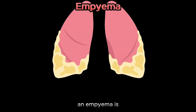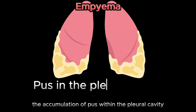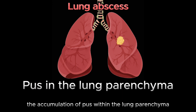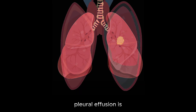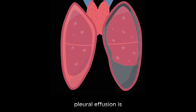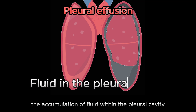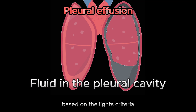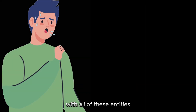An empyema is the accumulation of pus within the pleural cavity, but a lung abscess is the accumulation of pus within the lung parenchyma. Pleural effusion is the accumulation of fluid within the pleural cavity, which can be either transudative or exudative based on the Light's criteria.